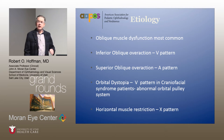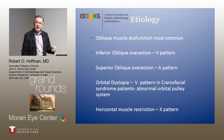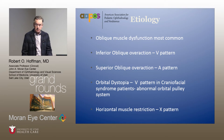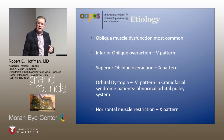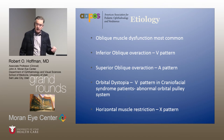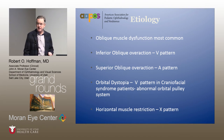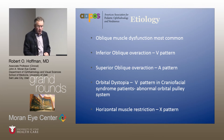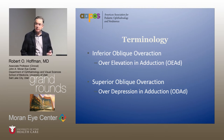Horizontal muscle restriction, like what you see in Duane syndrome, can involve slippage of the lateral rectus muscle over the surface of the globe — that's what causes upshoots and downshoots in Duane syndrome. It turns out that in X-pattern strabismus, which we're going to talk about, that has also been shown to be an etiology.